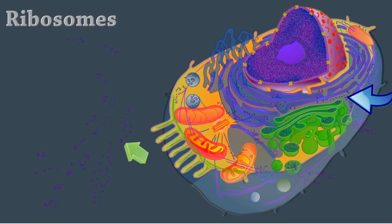Ribosomes are dense particles that consist of two subunits, each of which is composed of ribosomal RNA and protein. They may be free or attached to the rough endoplasmic reticulum. This is where protein synthesis takes place.